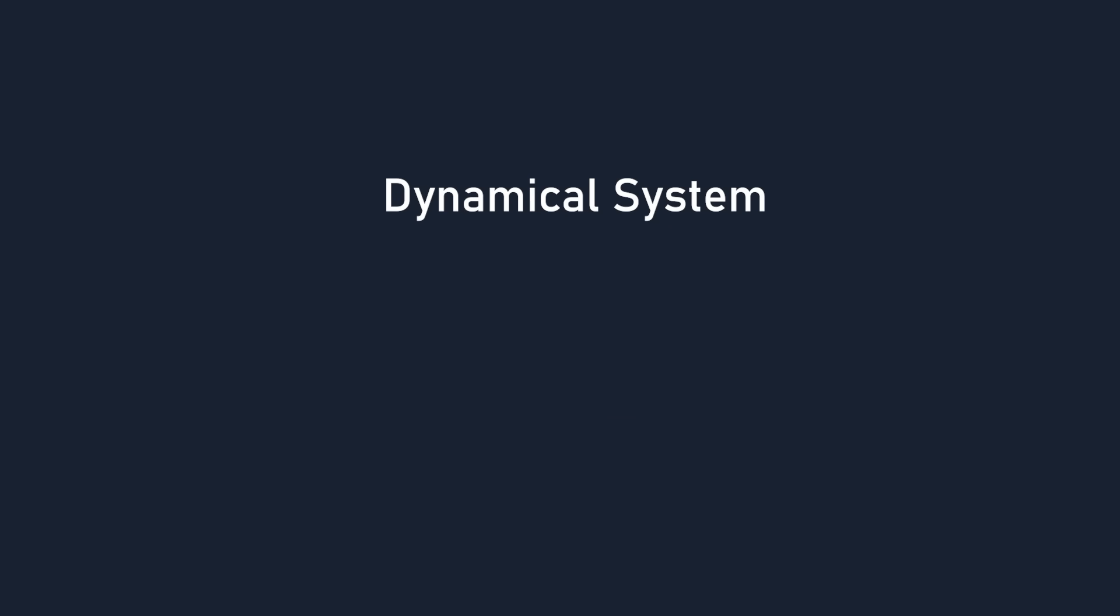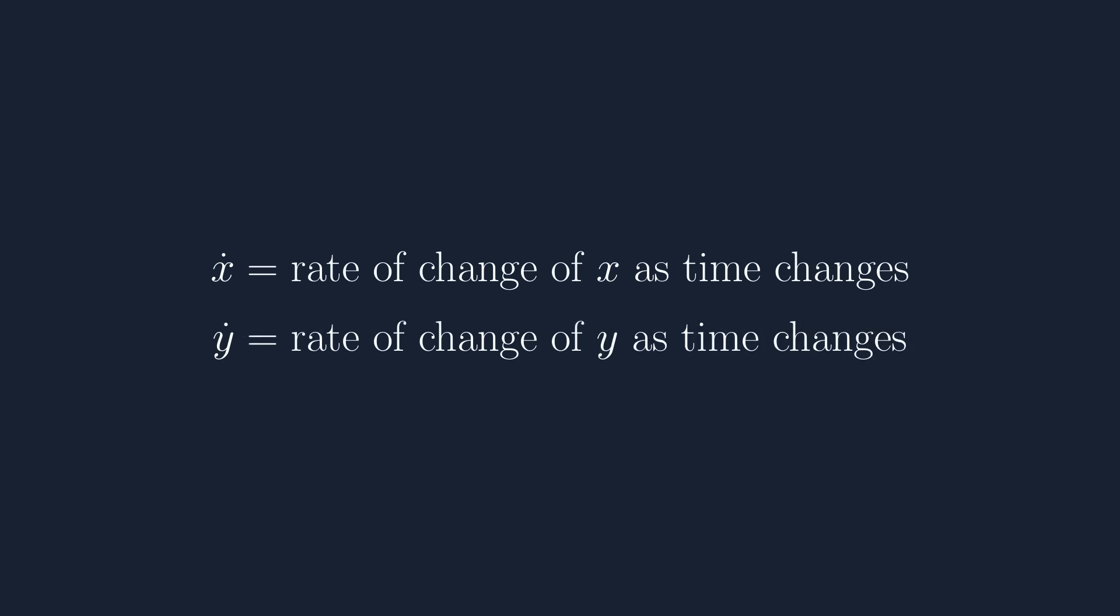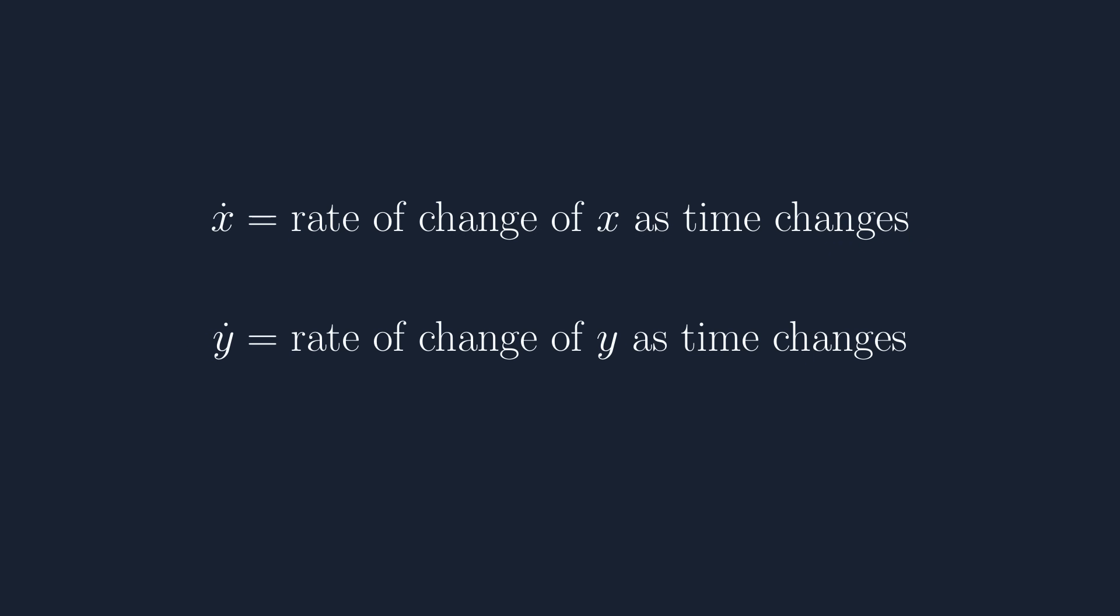A dynamical system involves one or more variables that change over time according to autonomous differential equations. For example, let's say there is a system that has two variables x and y. x dot is the rate of change of x as time changes, and y dot is the rate of change of y as time changes. Keep in mind that even though it doesn't show it, x and y depend on the independent variable of t, which stands for time, and this dot notation is special in that it can only be used when the independent variable is time.